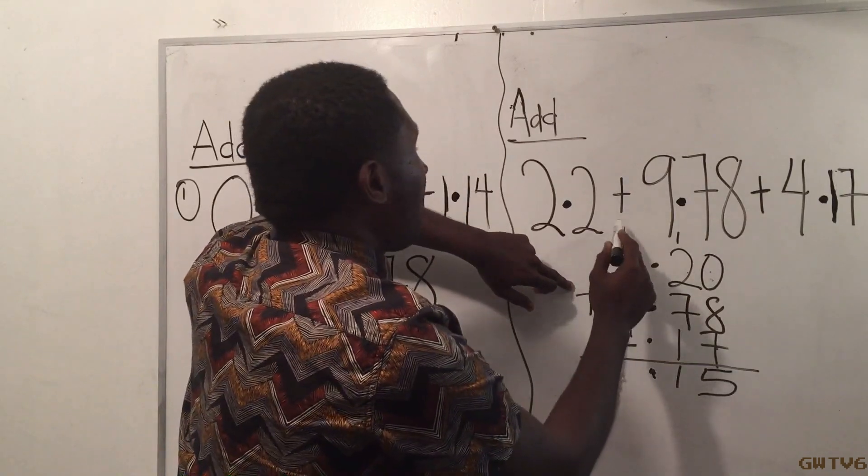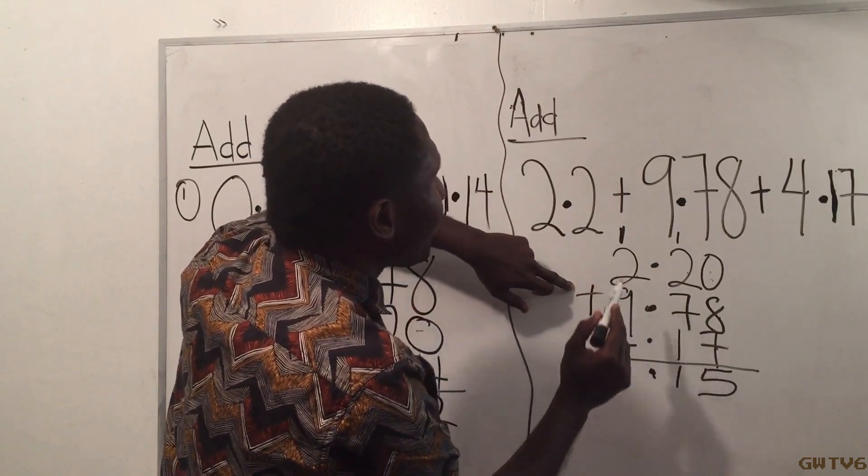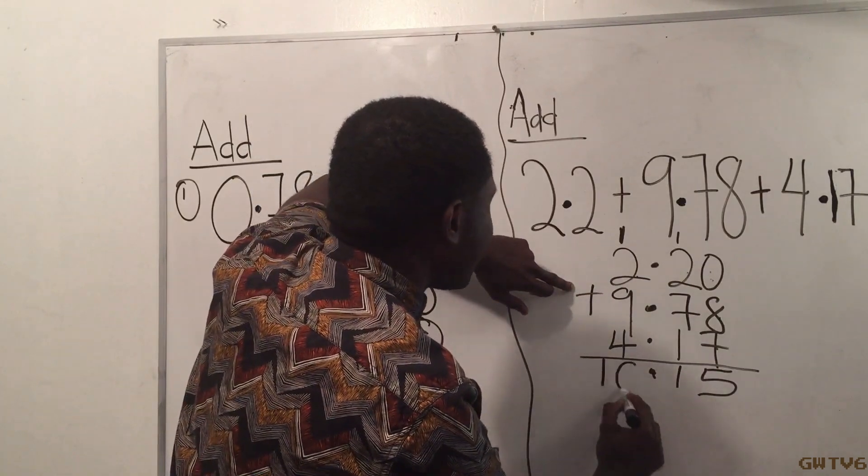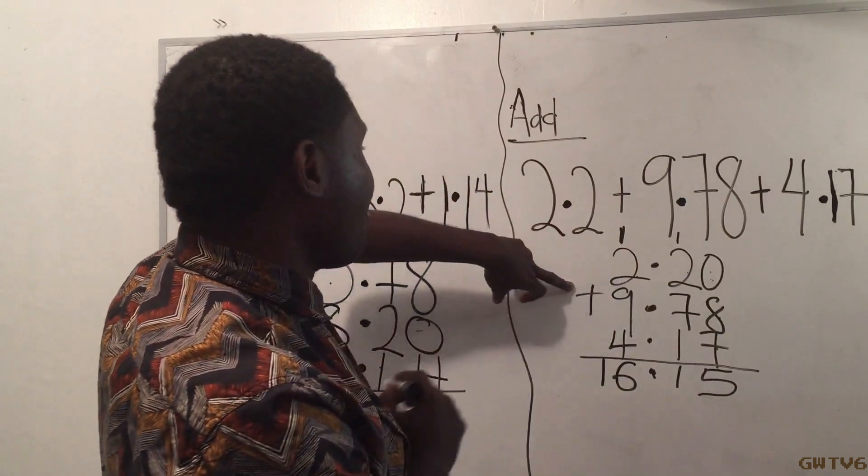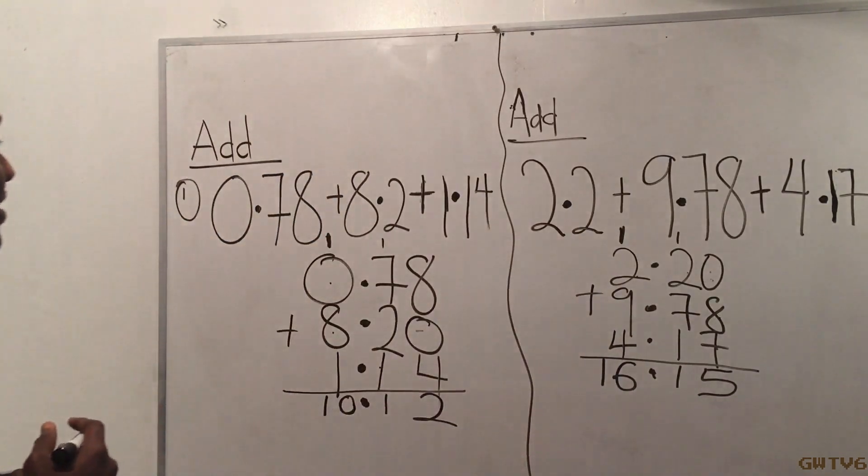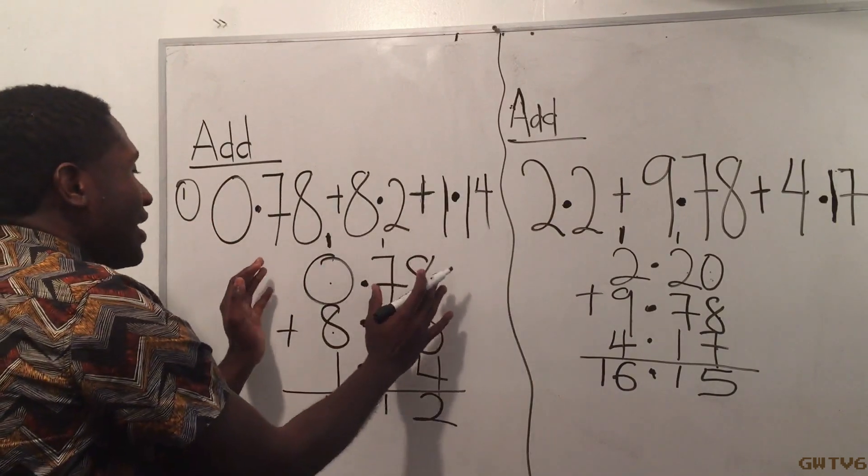Now 1 plus 2 is 3, plus 9 is 12, plus 4 is 16. So I put a 16 right here. So 16.15 is the answer.